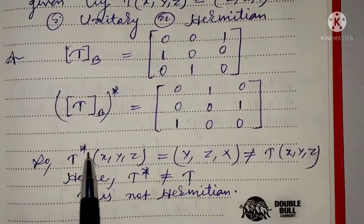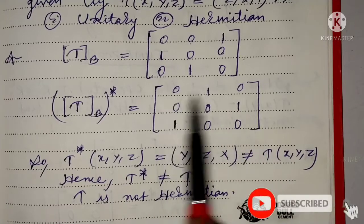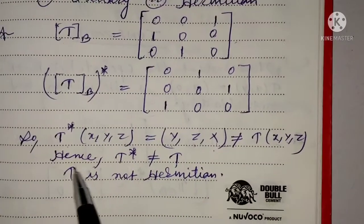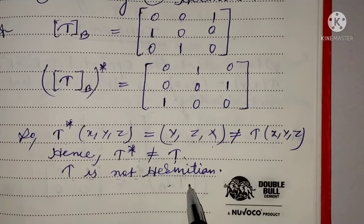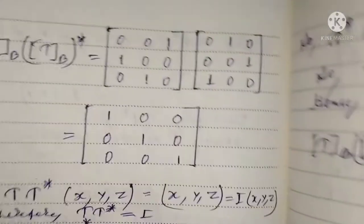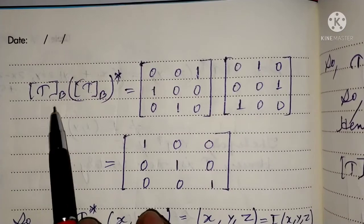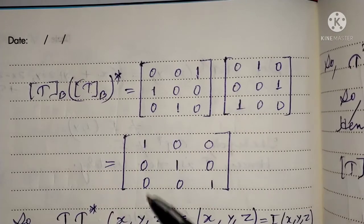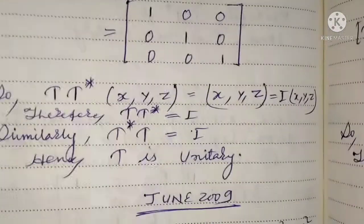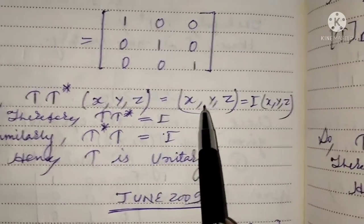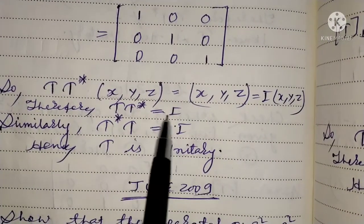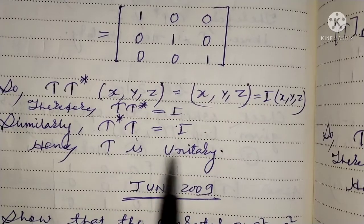Hence t* is not equal to T, therefore T is not Hermitian. Now for the unitary check: the matrix of T with respect to basis B multiplied by the adjoint of the matrix of T with respect to basis B equals the identity matrix. So T·t* of (x, y, z) equals (x, y, z), which equals I of (x, y, z). Therefore T·t* equals I, and similarly t*·T equals I. Hence T is unitary.